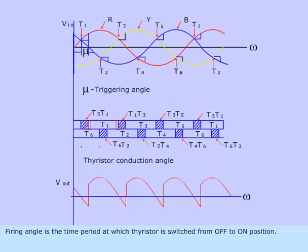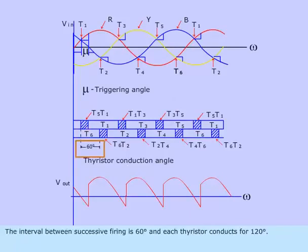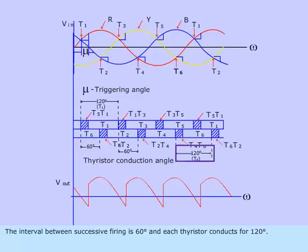Firing angle is the time period at which the thyristor is switched from OFF to ON position. The interval between successive firing is 60 degrees and each thyristor conducts for 120 degrees.